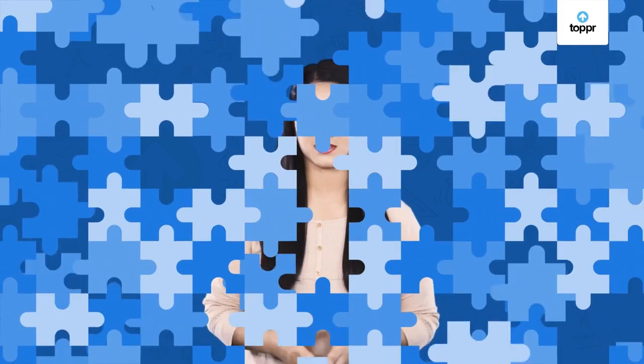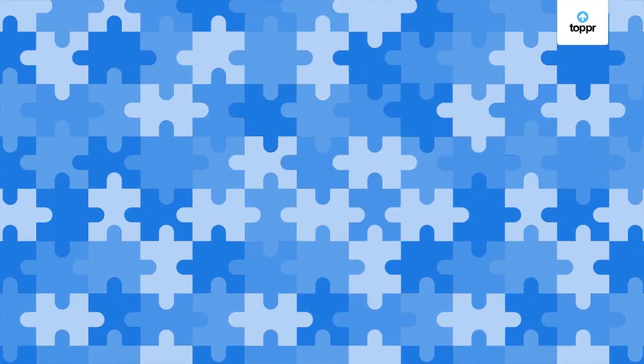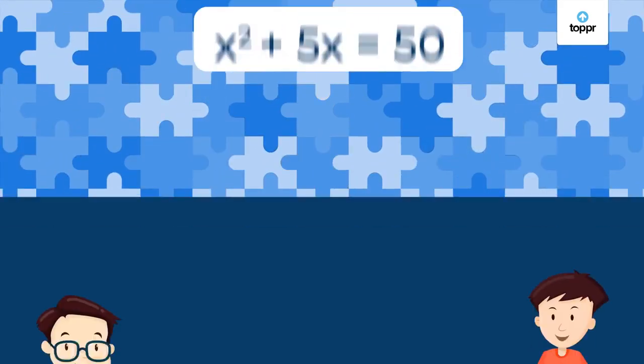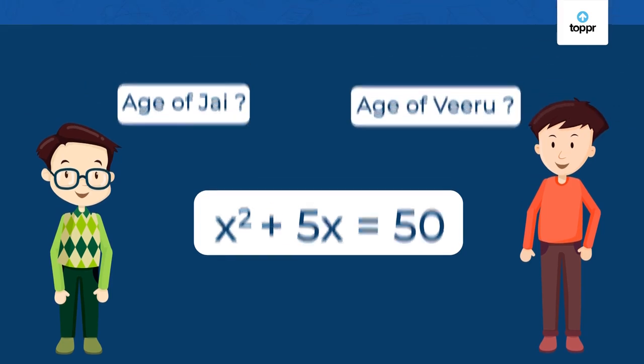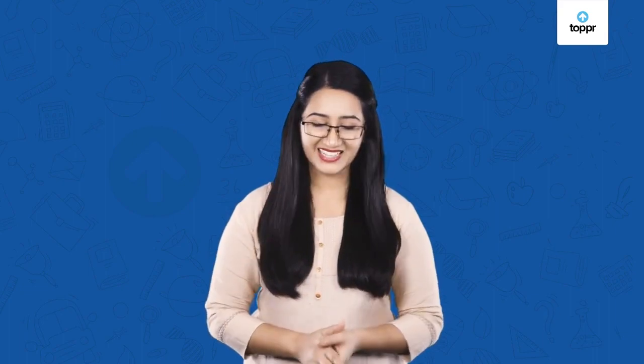But we still haven't solved our puzzle. All we know for sure now is that this equation is a quadratic equation, but we still don't know the ages of Jai and Viru. To learn how to solve this puzzle and similar problems using quadratic equations, go check out more videos on this topic. I'll see you soon.